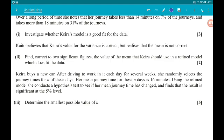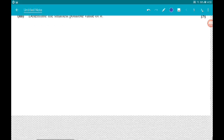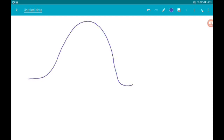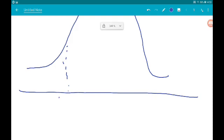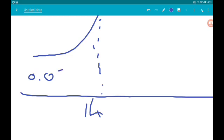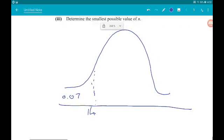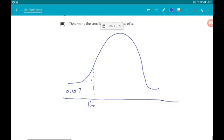Okay, then for part 2. Kaito believes Kira's value for the variance is correct, but the value for the mean that Kira should use in a refined model that does fit the data. Okay. So if we just sketch some of the distribution, we know that if we put 14 there, then we know that this area is 0.07. So what we can do is find the z value that creates an area of 0.07 to the left of it.